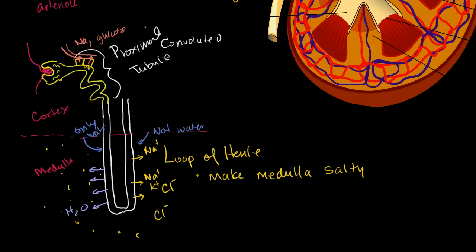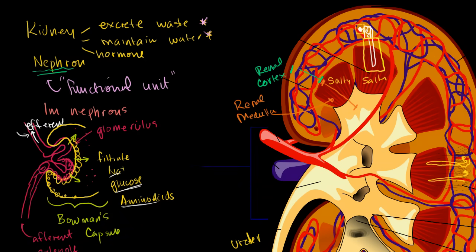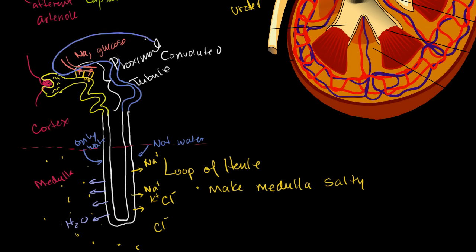This is a major mechanism for reclaiming water that got filtered out initially. The loop dips far down into the salty medulla to give time for this water to exit. After the loop of Henle, we enter the distal convoluted tubule — distal meaning further away. The distal convoluted tubule actually passes very close to the Bowman's capsule.